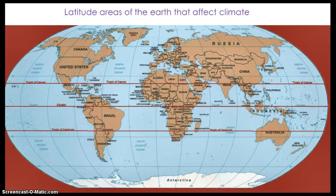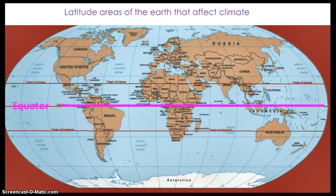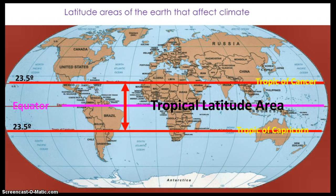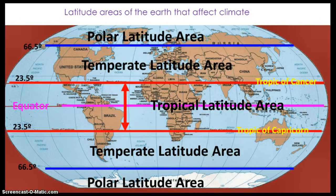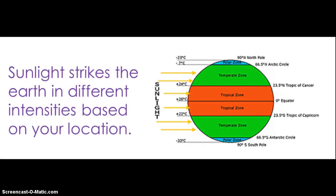There are three main latitude areas on earth that are defined by climate. The area around the equator is our starting point. 23.5 degrees north and south of the equator is known as the tropical area. The areas 23.5 degrees to 66.5 degrees north and south are called the temperate latitude areas. The polar areas fall from 66.5 degrees north or south and stretch to the poles. The amount of sunlight each area gets greatly affects the climate, as seen by examining how the sun's rays strike the earth.